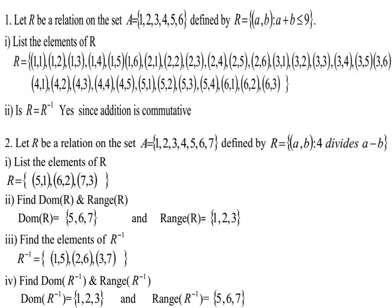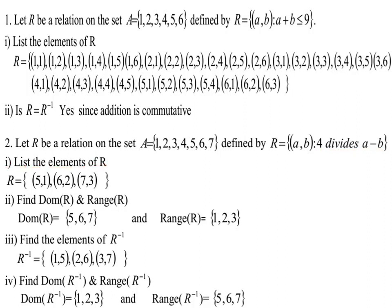Question number two: let R be a relation on set A where set A contains the elements 1, 2, 3, 4, 5, 6, 7, defined by the relation R which contains the ordered pair (a, b) such that four divides a minus b. We need to list the elements of R. Since R contains ordered pairs (a, b) where four divides a minus b, and our set A is {1, 2, 3, 4, 5, 6, 7}, the elements of R include (5,1), (6,2).